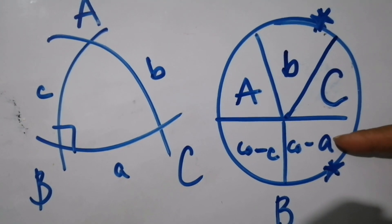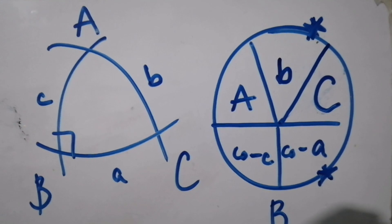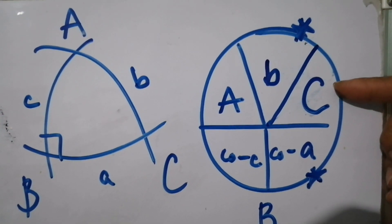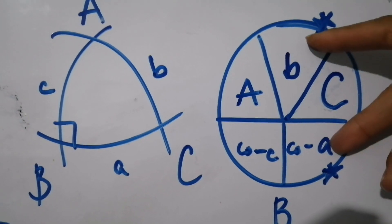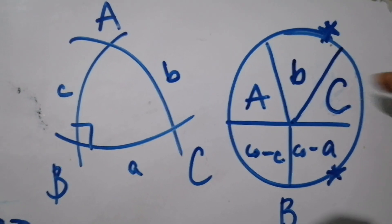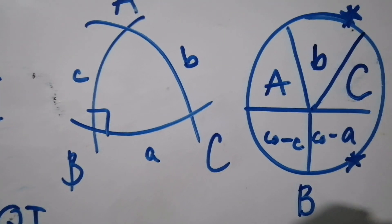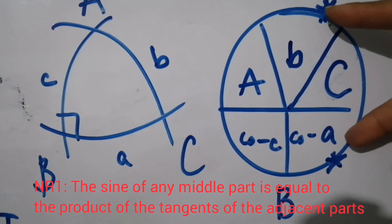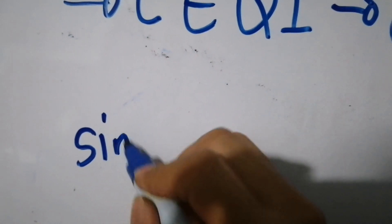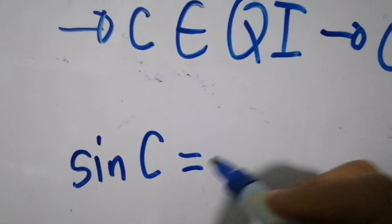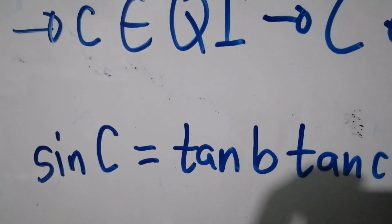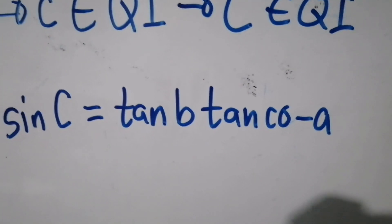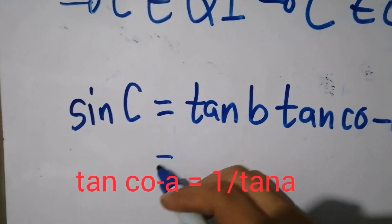With the two given parts marked, the first thing we can solve for is angle C, which serves as the middle part — it is adjacent to both given parts. We use the first Napier's Rule: the sine of the middle part equals the product of the tangents of the adjacent parts. So, sine of angle C equals tangent of small b multiplied by tangent of co-A.